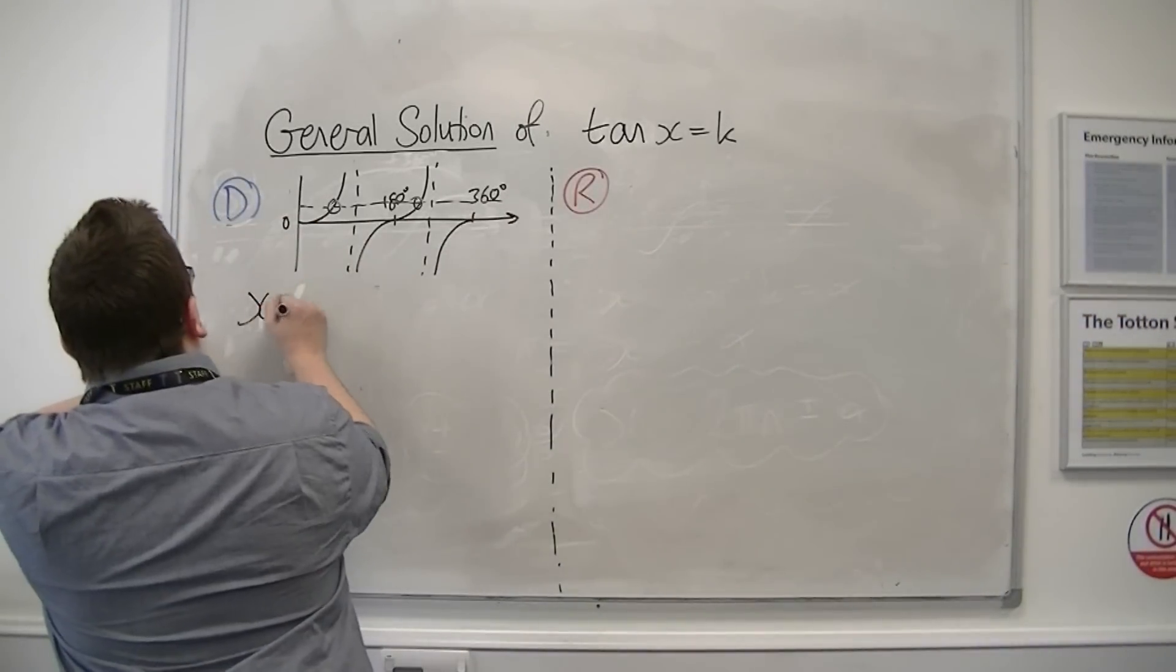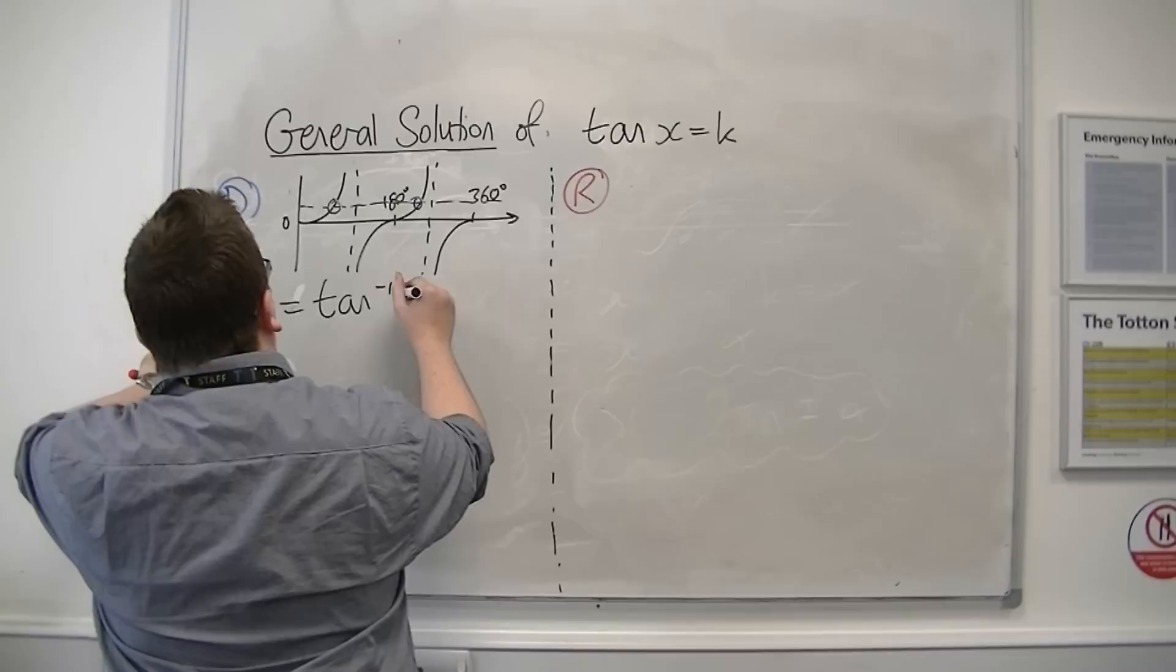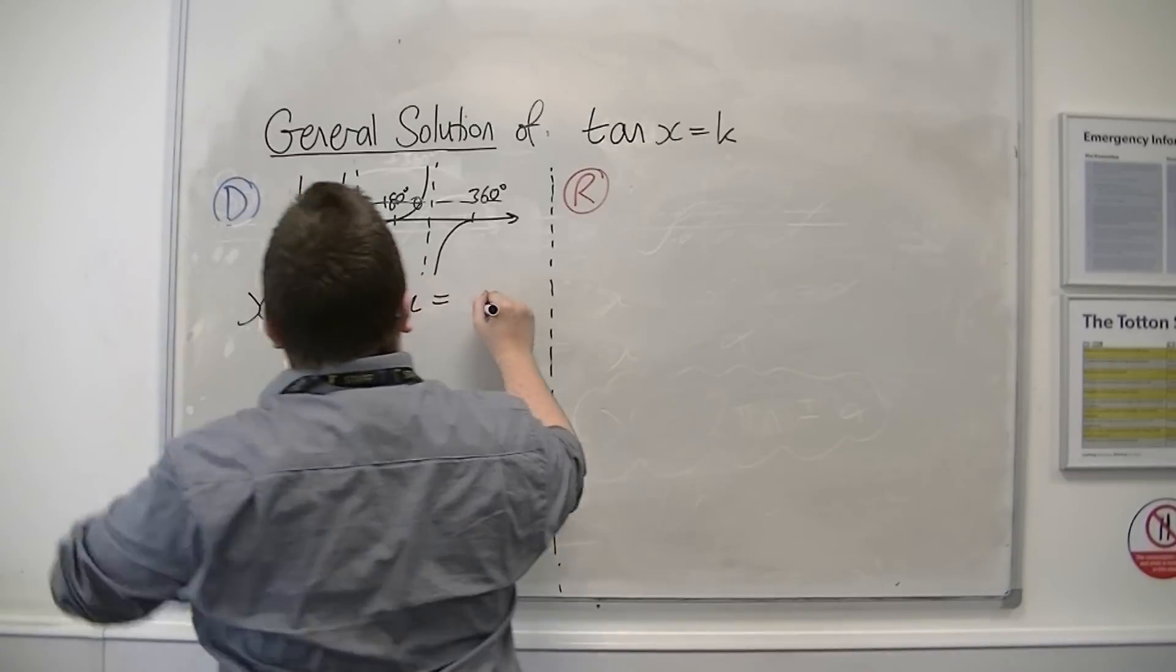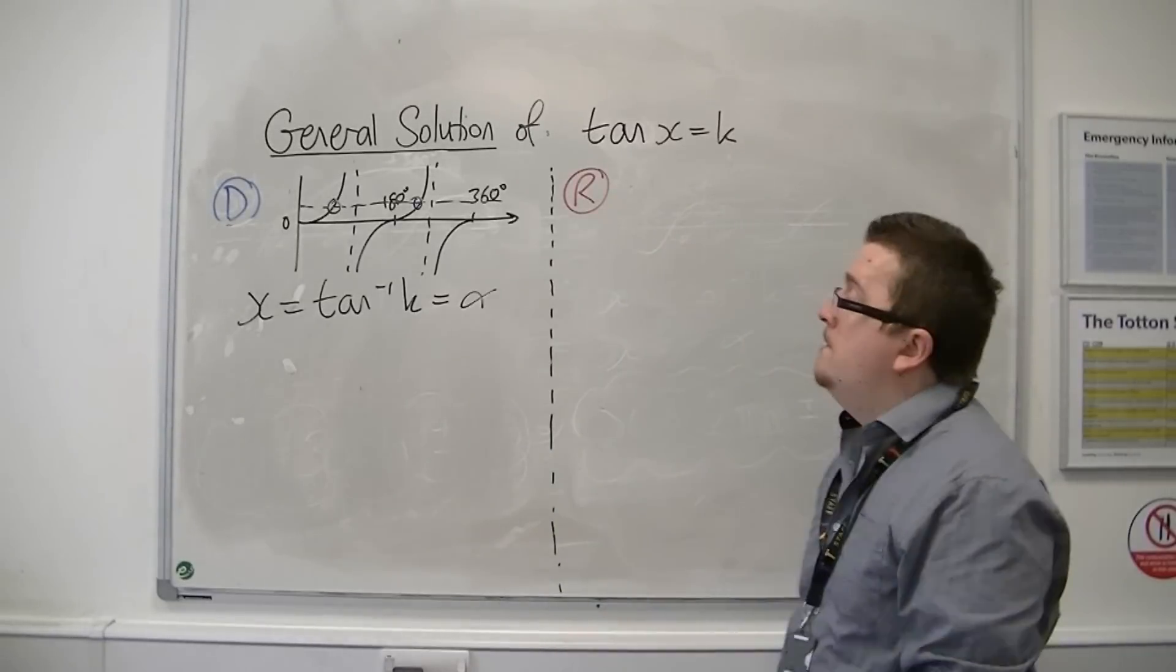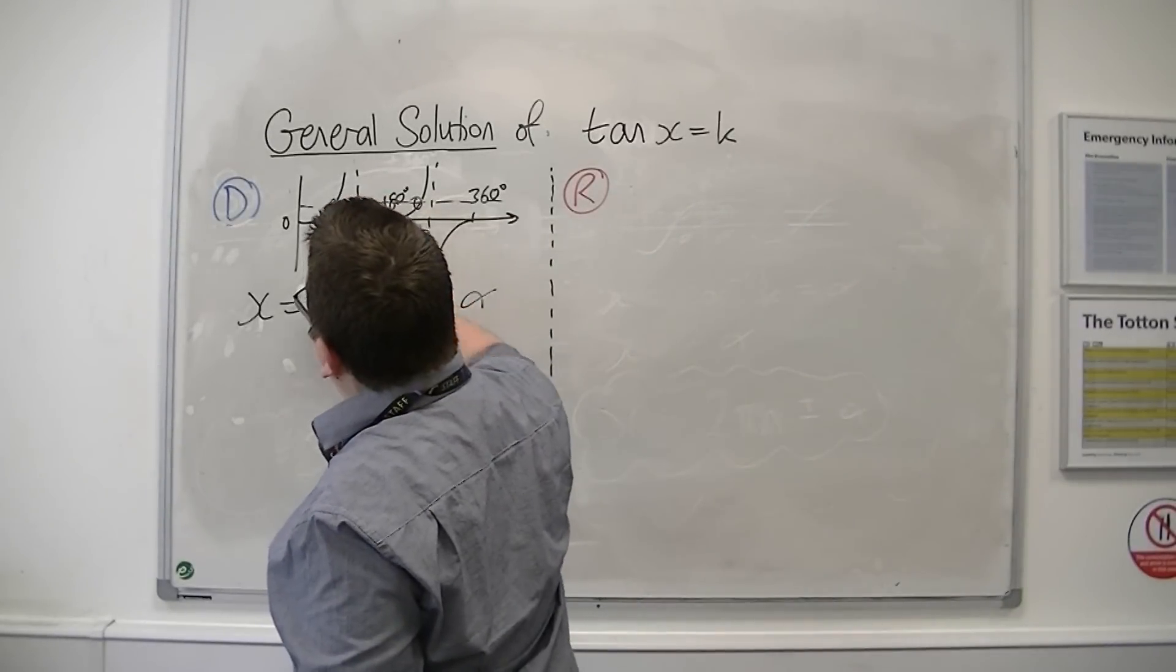Now, if you inverse tan both sides, then let's say that this solution is alpha, as we've done before. So there's alpha.